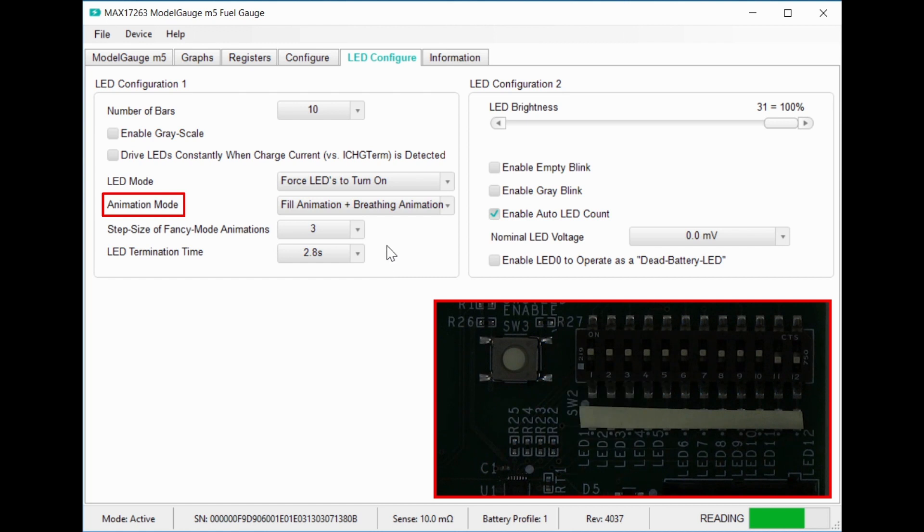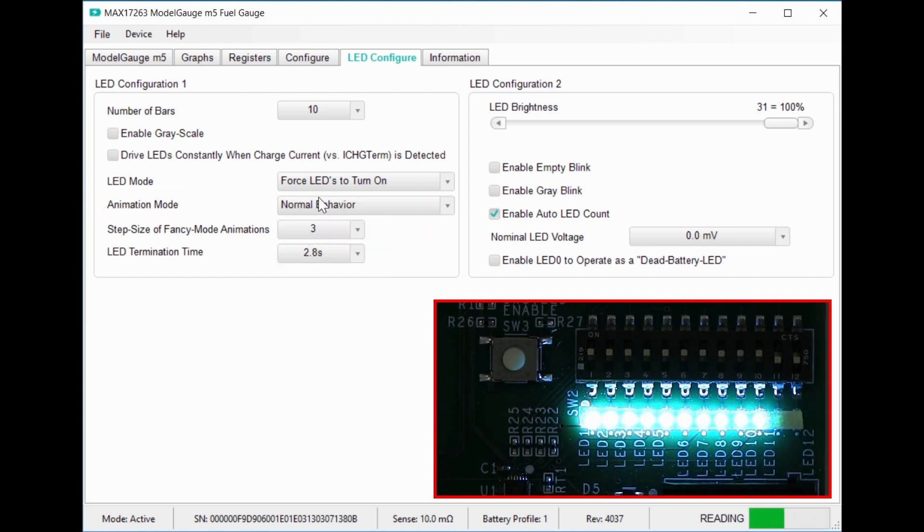Okay, let's reset the normal behavior and check out the other features. The grayscale feature adds half steps by dimming the last LED. This lets you get higher state of charge resolution for a given number of LEDs. With 10 LEDs, the first half step would be at 97.5%. Right now, the battery is at 97%, so if I toggle the setting, you can see LED 9 going between full and half brightness.